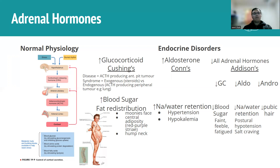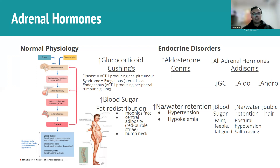Another feature of Cushing's is fat redistribution. You see a 'moon face' — a rounder face — along with central adiposity, as shown in the image. You can differentiate this from regular weight gain by looking for red-purple striae, indicating connective tissue damage. There's also a 'buffalo hump' — fat redistribution to the back of the neck.